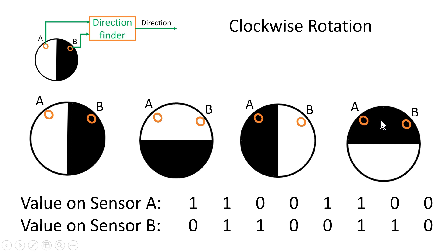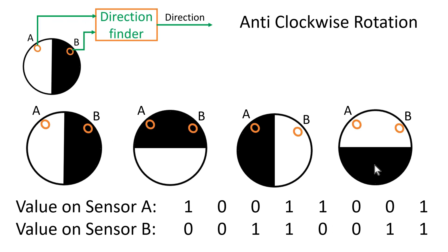In the fourth position, both sensors A and B give logic 0 as their output. Then it returns to the original position where sensor A gives logic high and sensor B gives logic 0, and so on.